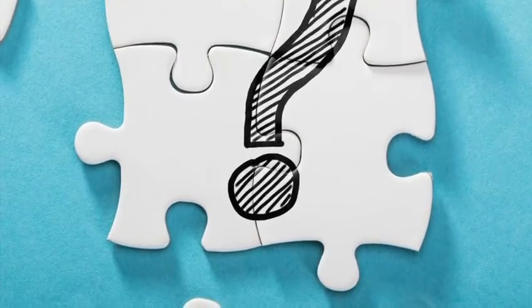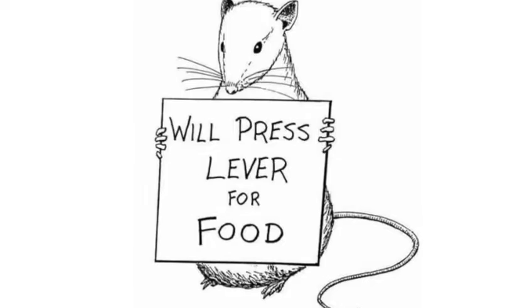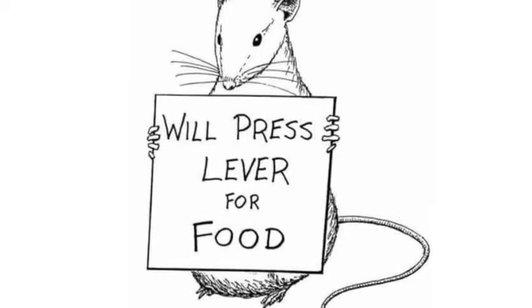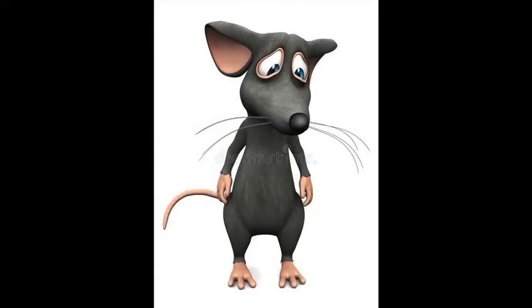Extinction was discovered by B.F. Skinner, as per his autobiography, due to the malfunction of his laboratory equipment. His first extinction curve showed up by accident. A rat was pressing the lever in an experiment on satiation when the pellet dispenser jammed. Skinner was not there at the time, and when he returned he found a curve in the results — the rat had gone on pressing although no pellets were received.